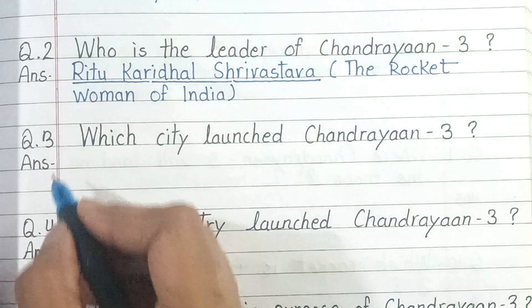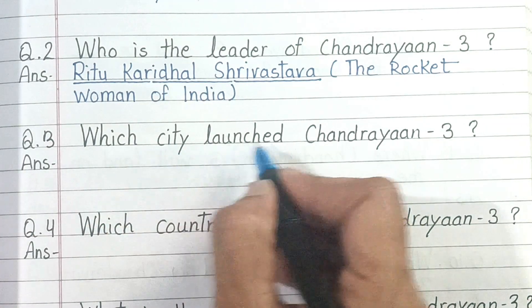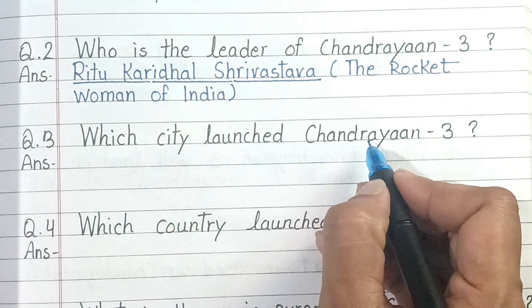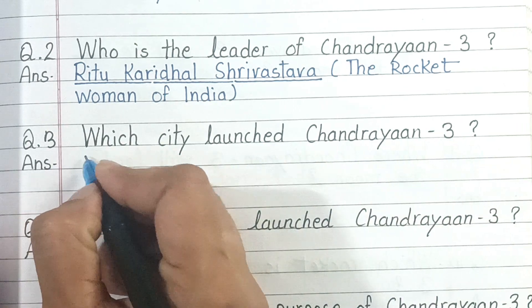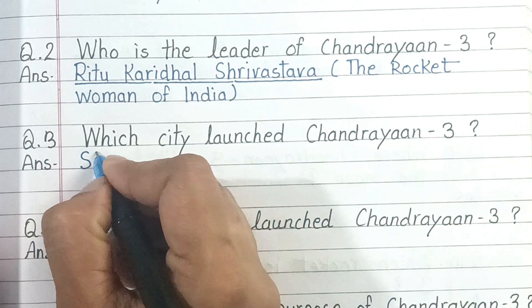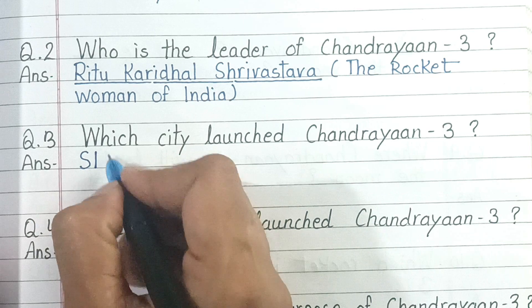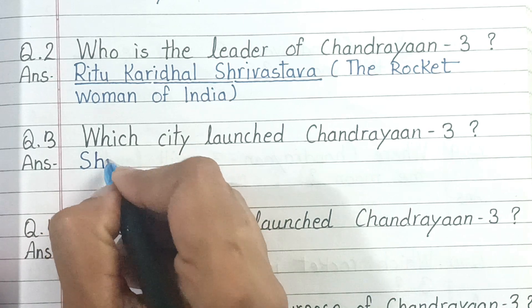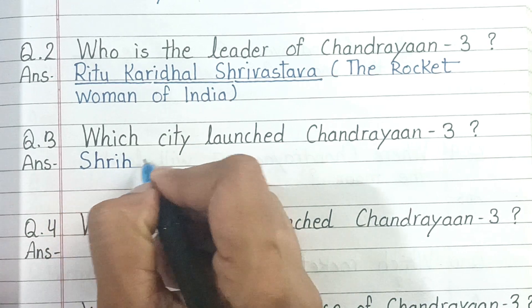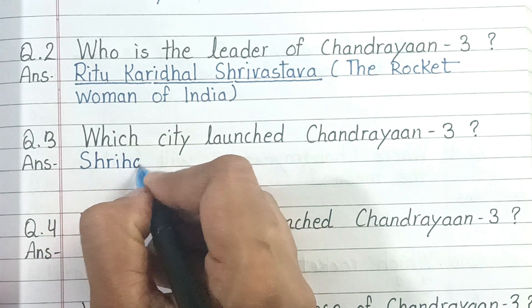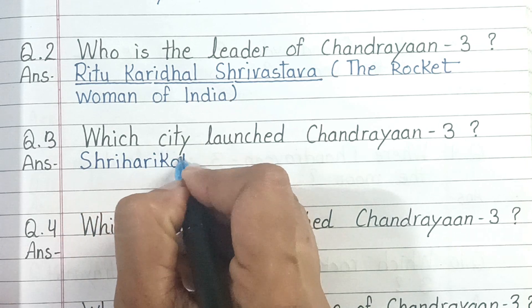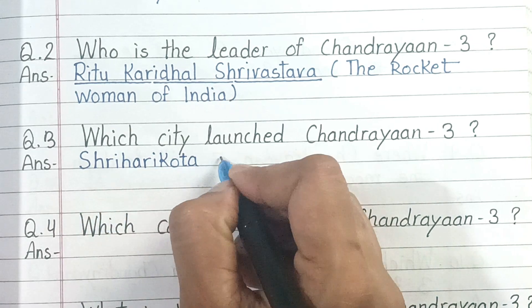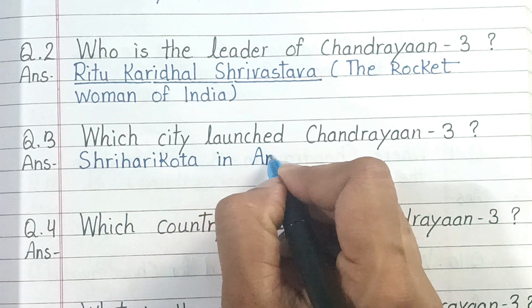Question number 3. Which city launched Chandrayaan 3? And the answer is Sriharikota in Andhra Pradesh.